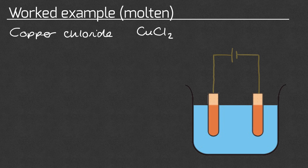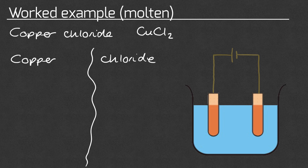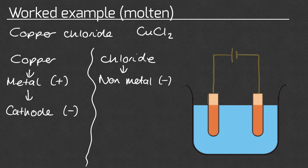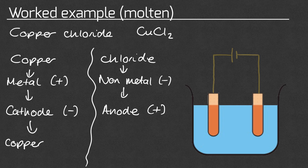We're now going to look at a worked example of determining the products of molten copper chloride. Remember the products are different whether you do it in molten or aqueous conditions, so we're looking at molten copper chloride. The first step is to break the ionic compound down into two parts: the copper and the chloride separately. Copper is a metal so it will be positive, and chloride is a non-metal so it will be negative. Because opposite charges attract, the positive copper will be attracted to the negative electrode — the cathode. Likewise, the negative chloride ion will be attracted to the anode. This means that at the cathode we will produce copper metal, and at the anode we will produce chlorine gas.